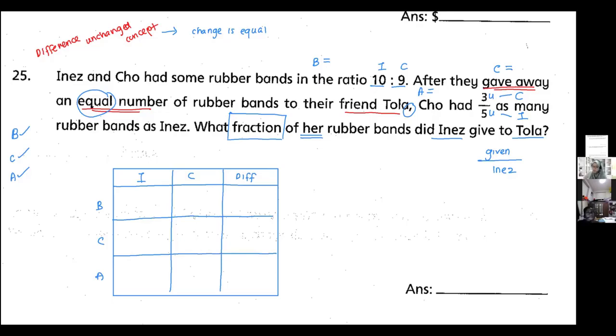Now we put in all the information we already highlighted in the question. Before Inez: 10 units—because ratio is in its units form. Before Cho: 9 units. Give away means minus, but I do not know, so it's a question mark for both. But I know that these two are equal.